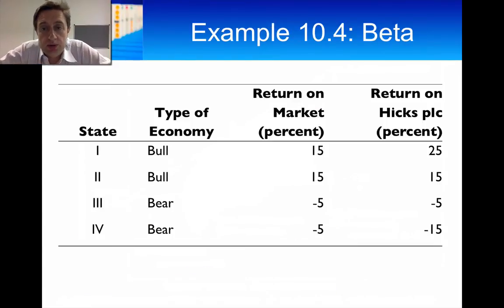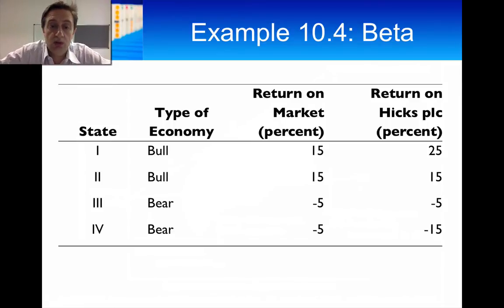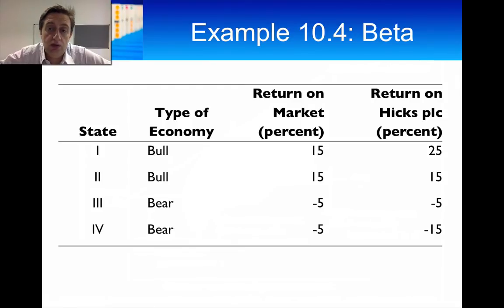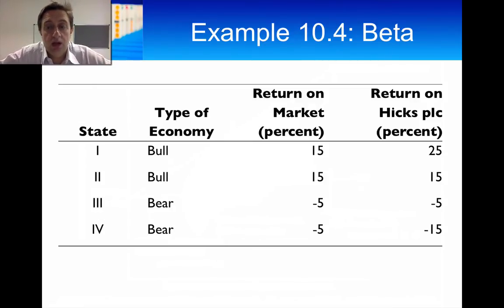Now we're going to talk about beta, which is a measure of risk. The best way to explain it is with an example. We have four different states of the economy: two bull markets where the economy is doing well, and two bear markets. In a bull market, the market returns either 15%. For a company, if the market return is 15%, there's a 50% chance the company returns 25% and a 50% chance it returns 15%. In a bear market, if the market returns minus 5%, there's a 50% chance the company returns minus 5% and a 50% chance it returns minus 15%.